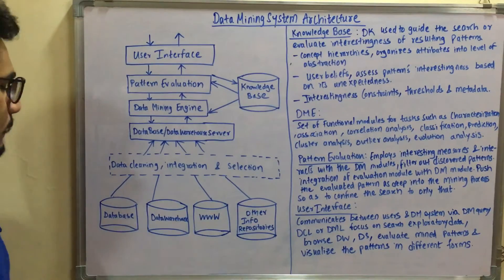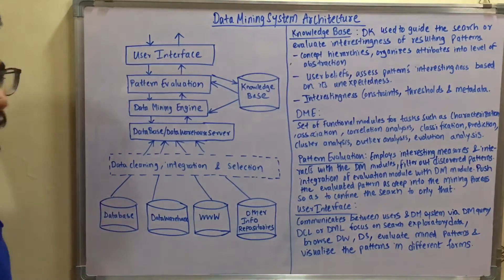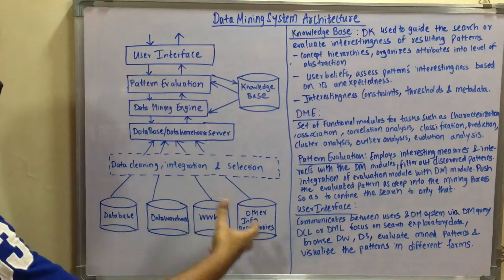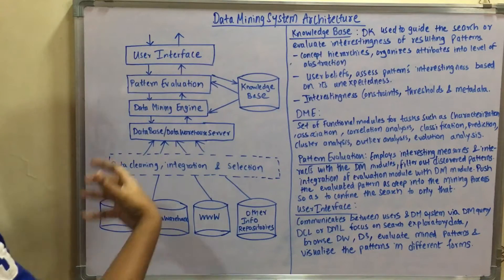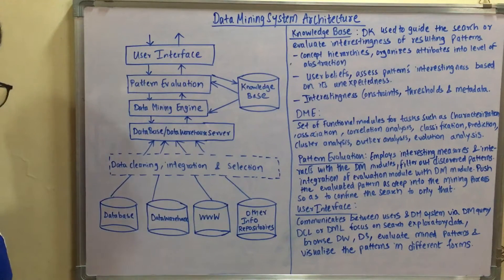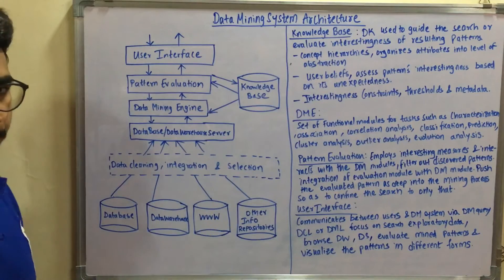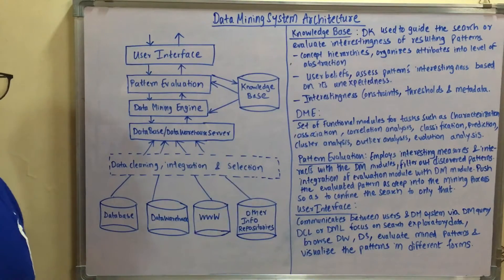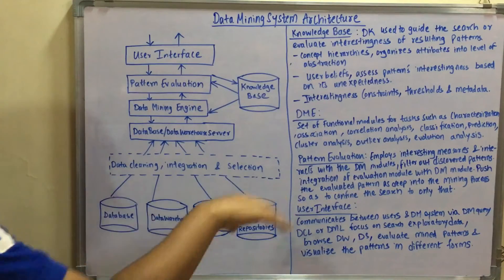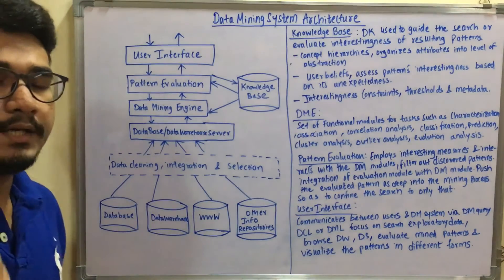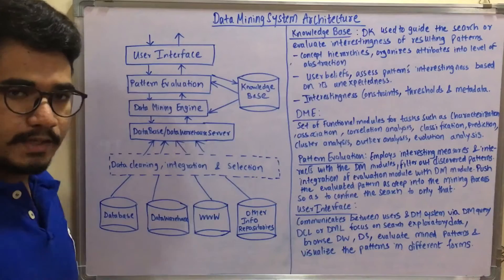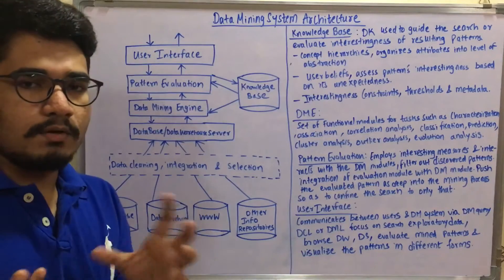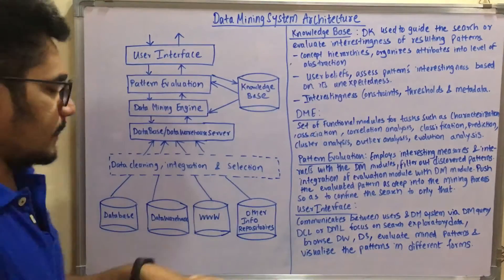At the base level, you can see there are many repositories and storage mechanisms — databases, data warehouses, the worldwide web and other information repositories, grids, JDBC files, Excel files, and so on. This becomes the base layer where all information is stored in databases or other kinds of repositories.